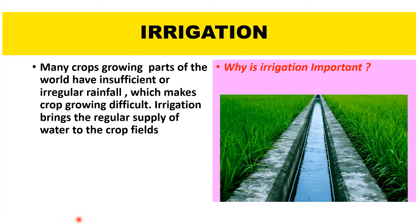Water is transported from areas of storage to the fields through canals. For example, in hot deserts that are dry all year, growing crops is impossible without irrigation — such as in Egypt, the Middle East, or California in the USA. Savannah and monsoon regions are dry during the dry season; crops are grown with the help of irrigation mainly in East Africa, India and Pakistan.